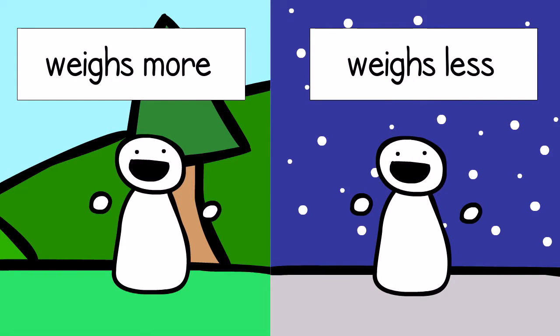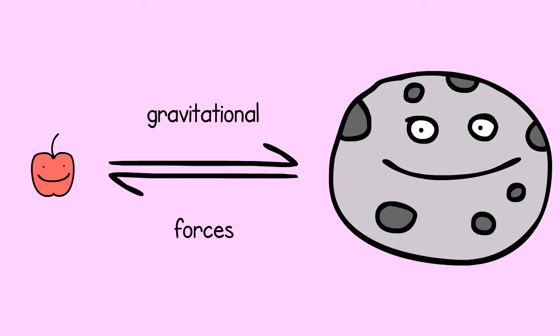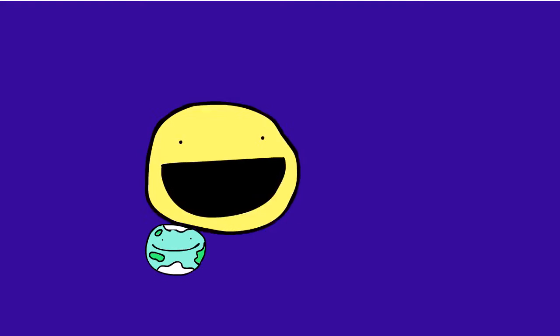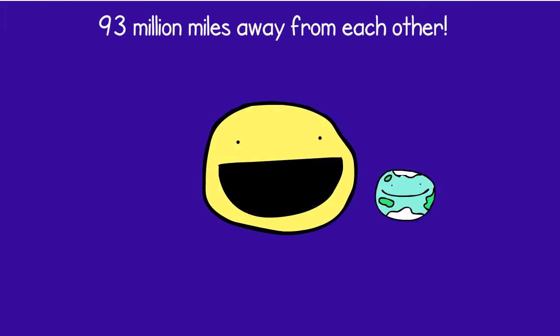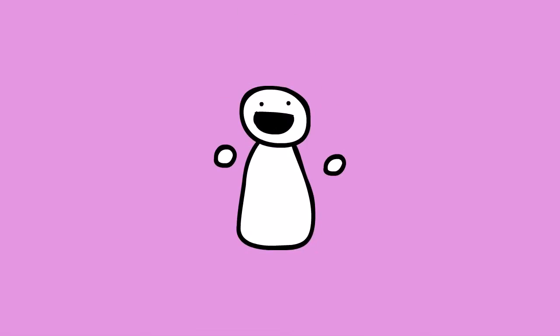Every object exerts a gravitational force on every other object. For example, the Earth is held in orbit by the Sun's gravity even though the two are 93 million miles away from one another. So what other forces are acting on Ben?